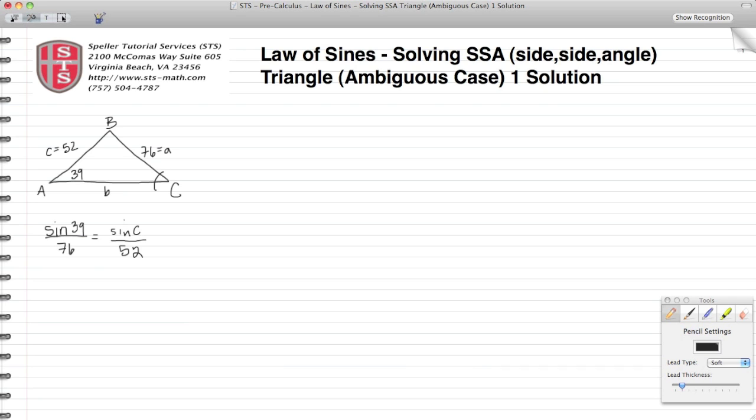I've set up the proportion using the Law of Sines where I have angle A, 39 degrees, divided by its opposite side 76 units, equal to the sine of angle C divided by its opposite side which is 52.